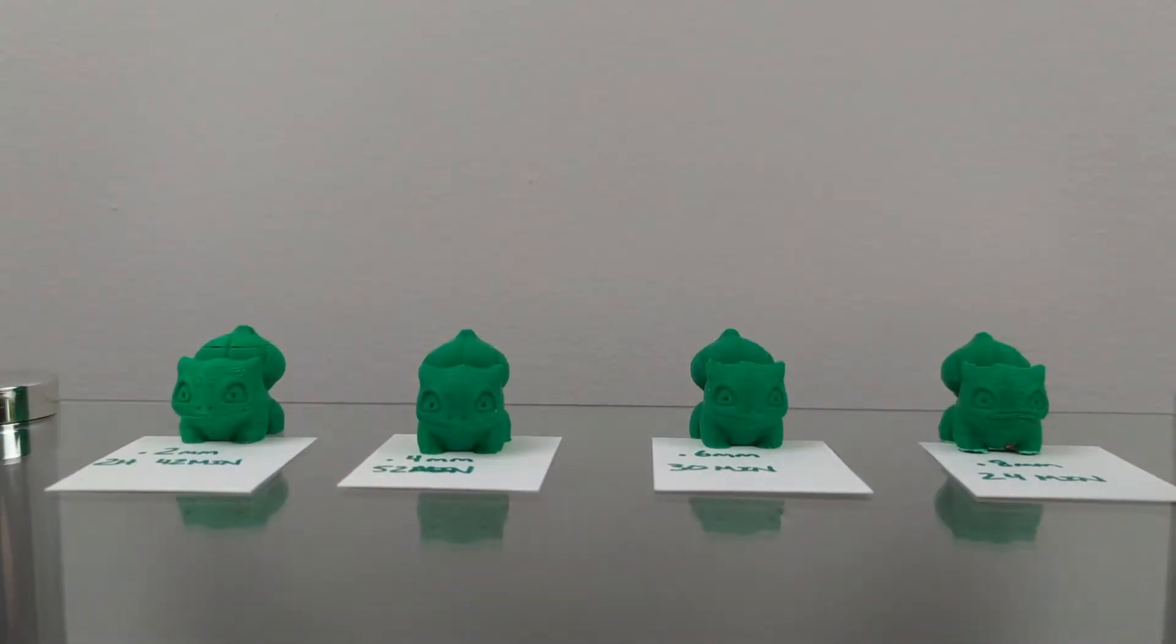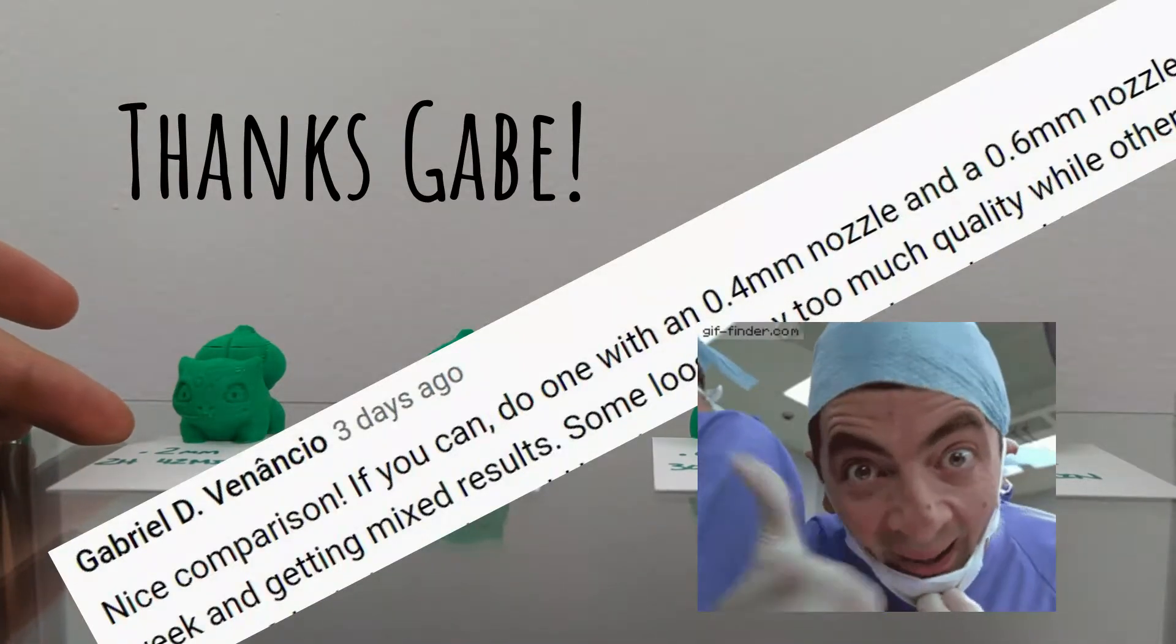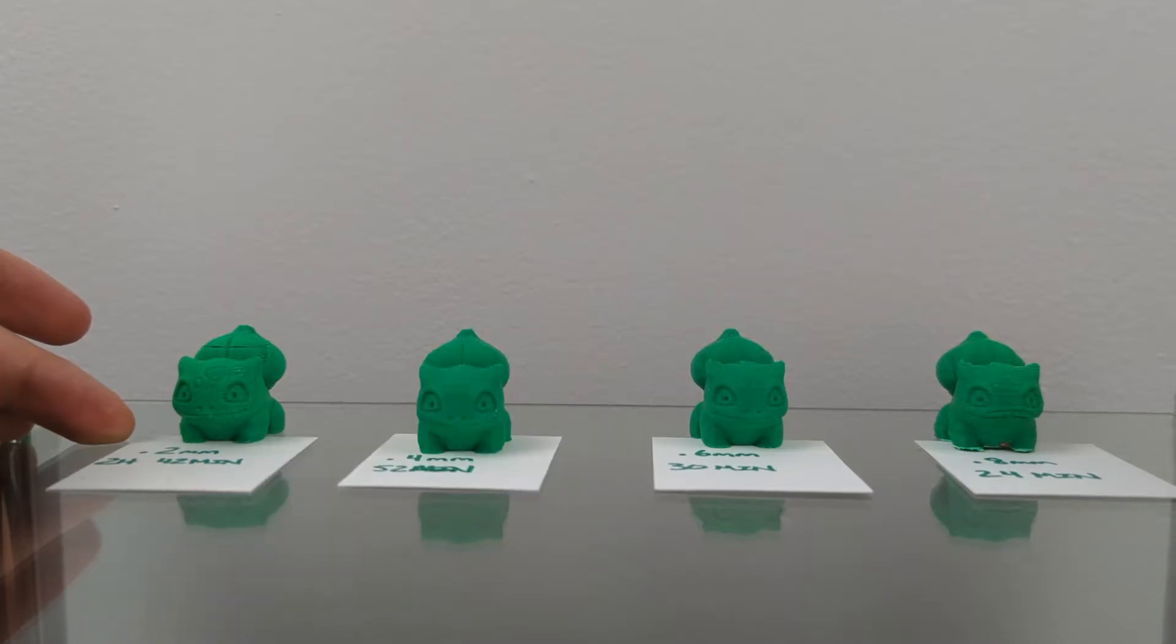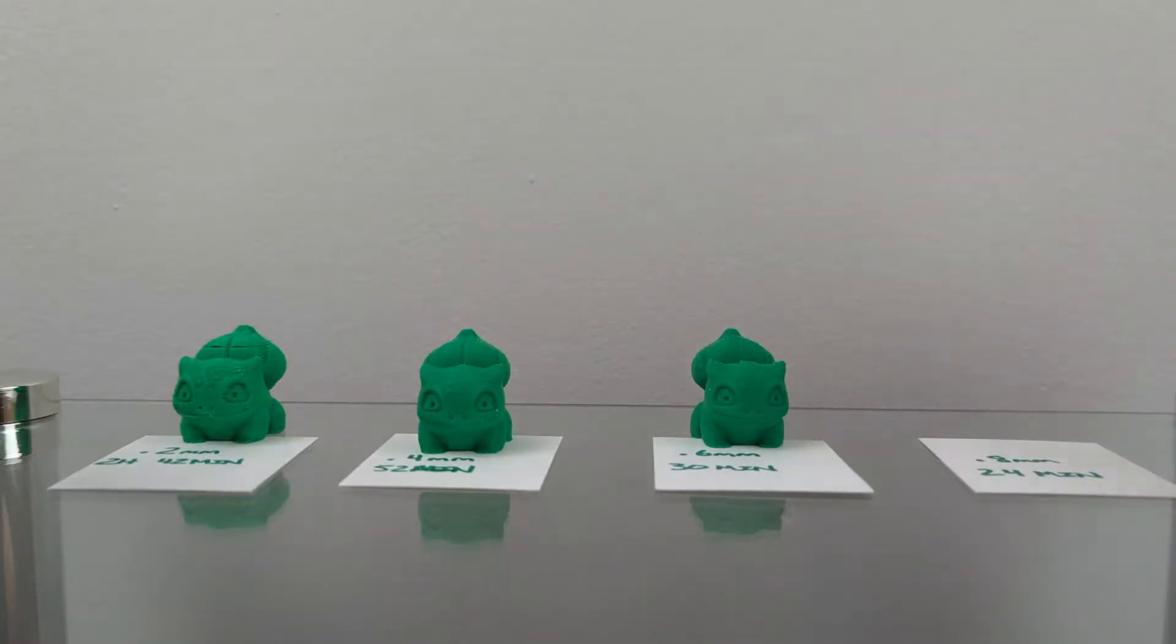I've already done a video covering 0.4 versus 0.8 millimeter nozzles, but I want to take it to the next level based on a commenter on that video and talk about 0.2 and 0.6 millimeter nozzles too. So let's take a quick look at all four of these little Bulbasaurs I created and see what the difference is, and maybe we can come to a conclusion on what may be the best to print in.